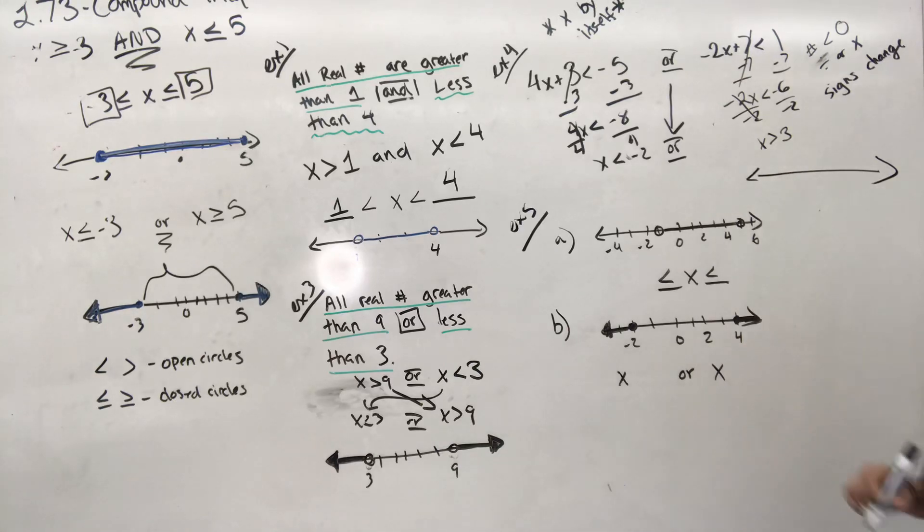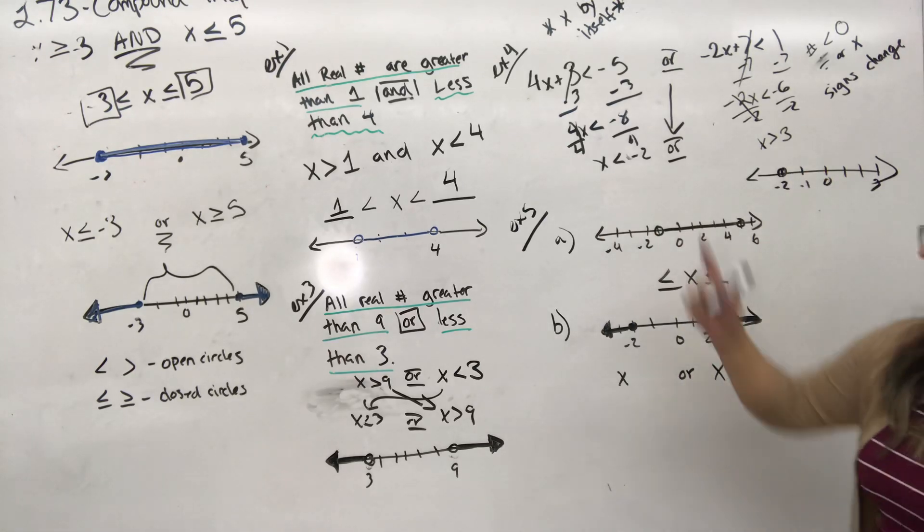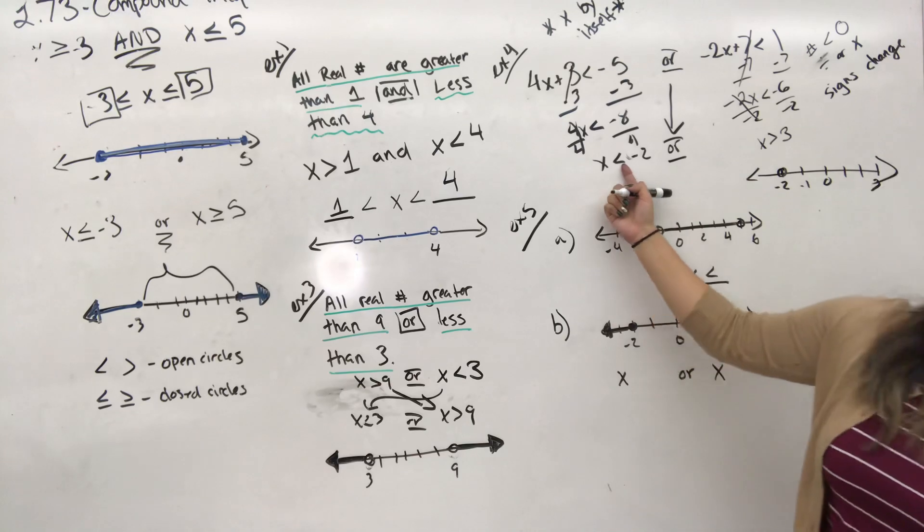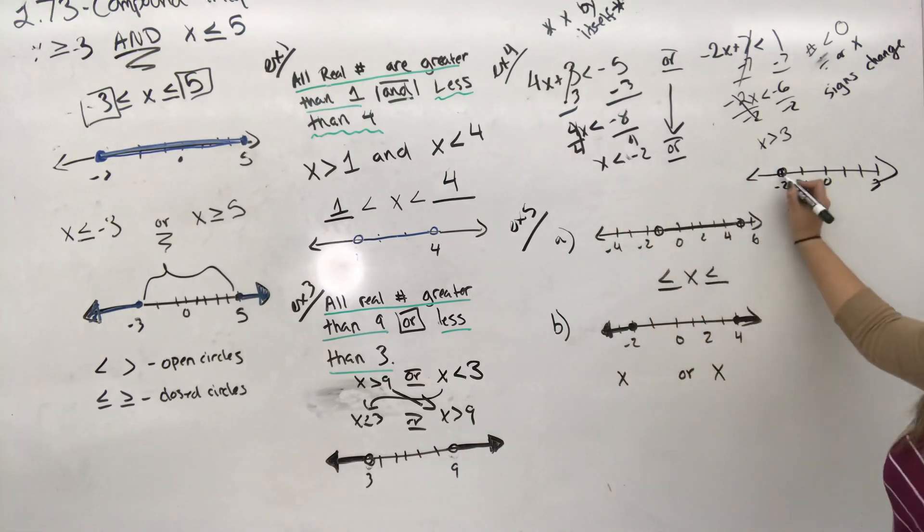So now I have x is less than negative 2. So that means my number line: I'm going to have negative 2, negative 1, 0, 1, 2, 3. So x is less than negative 2. So first of all, we need our circle at negative 2. Is it open or closed? Open. Okay, so it's an open circle.